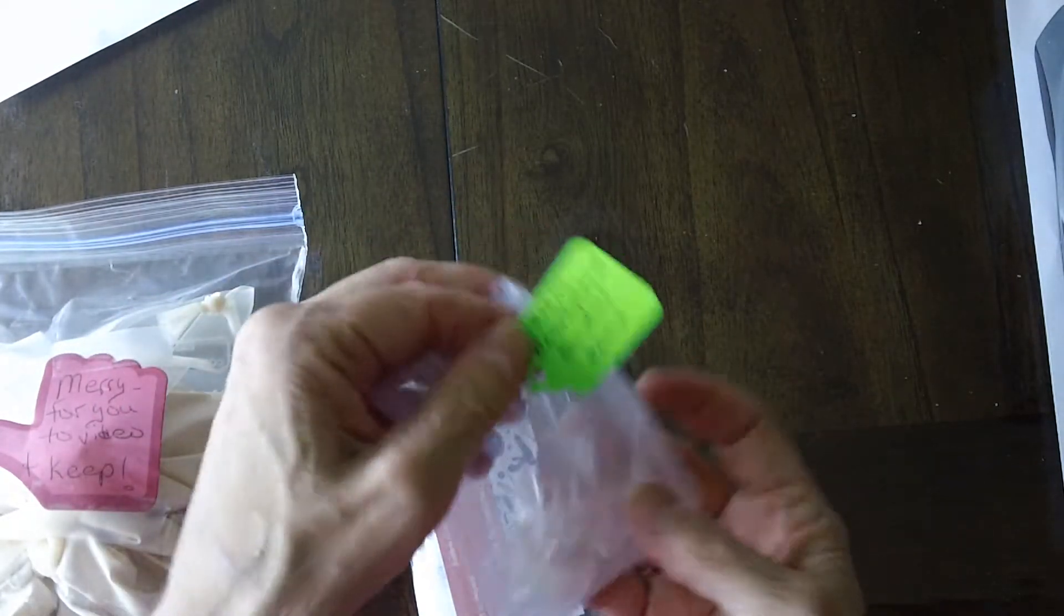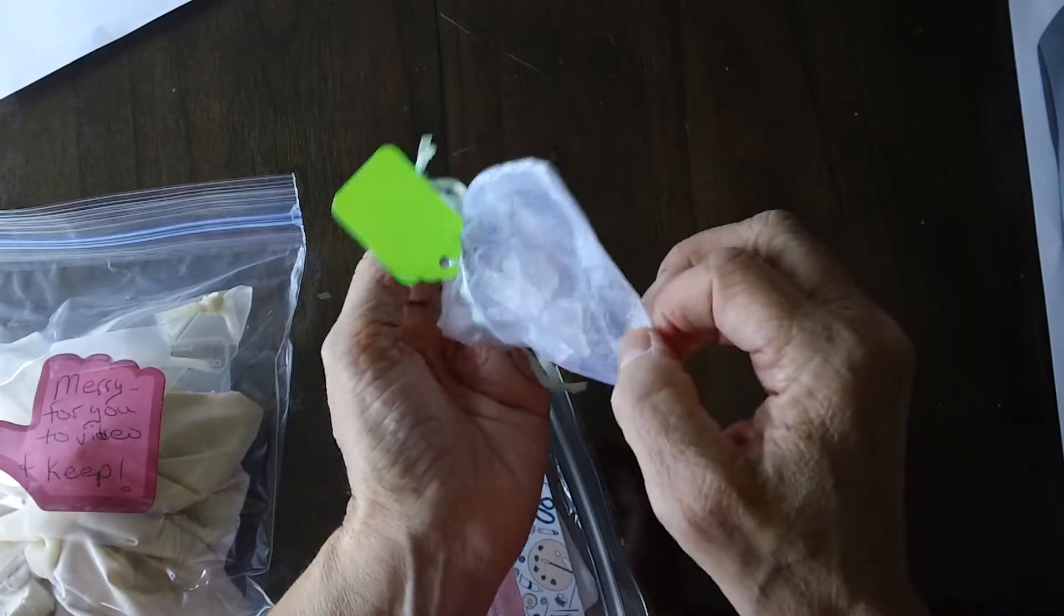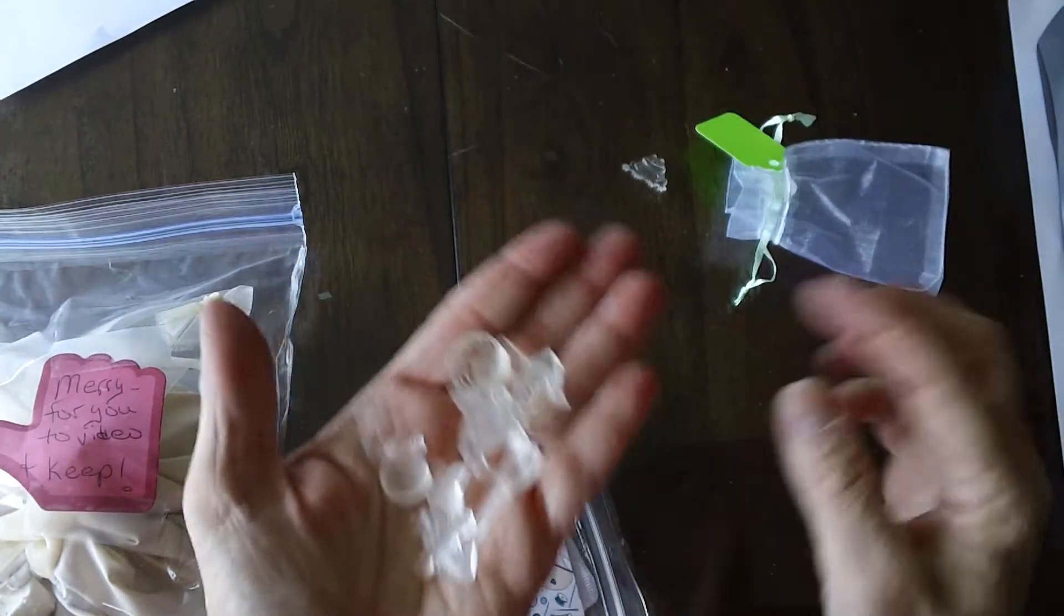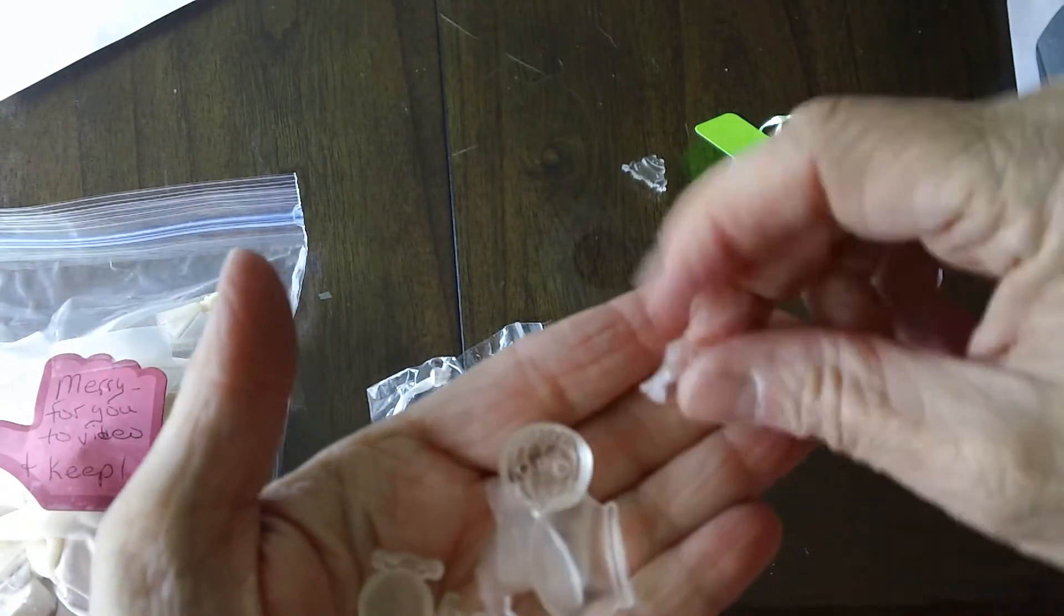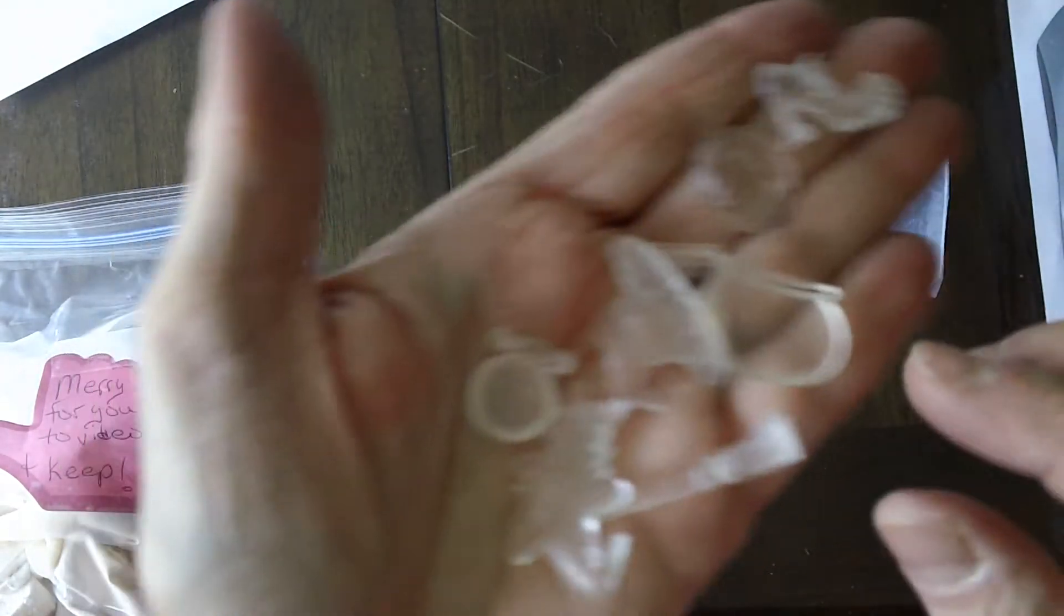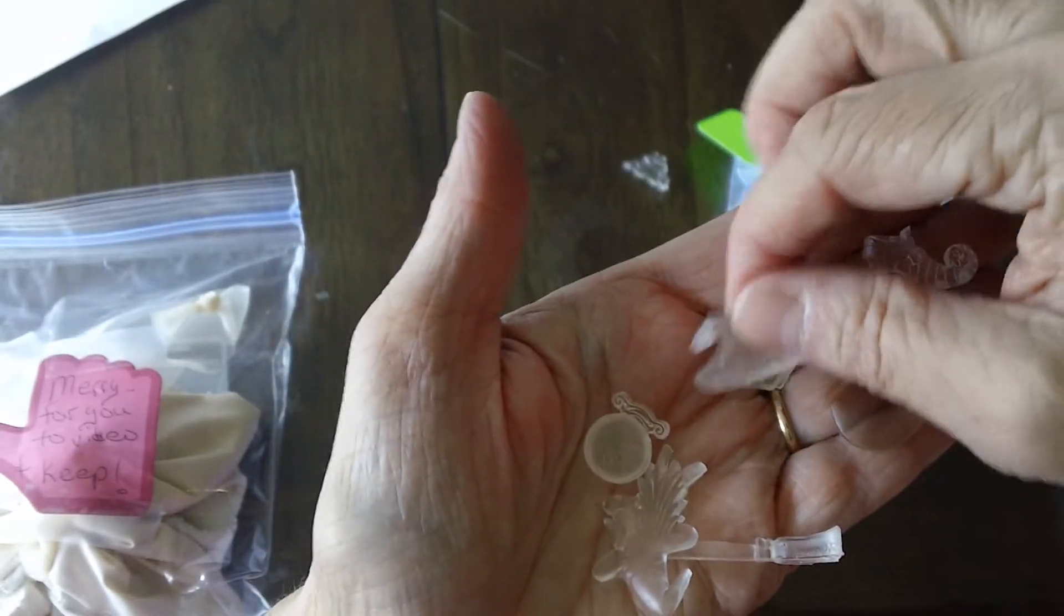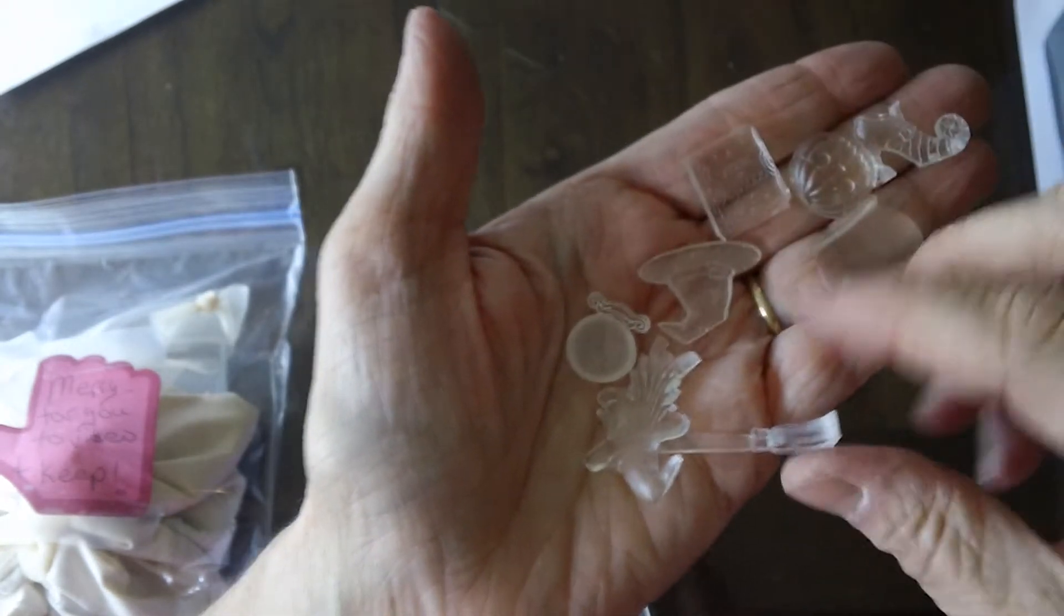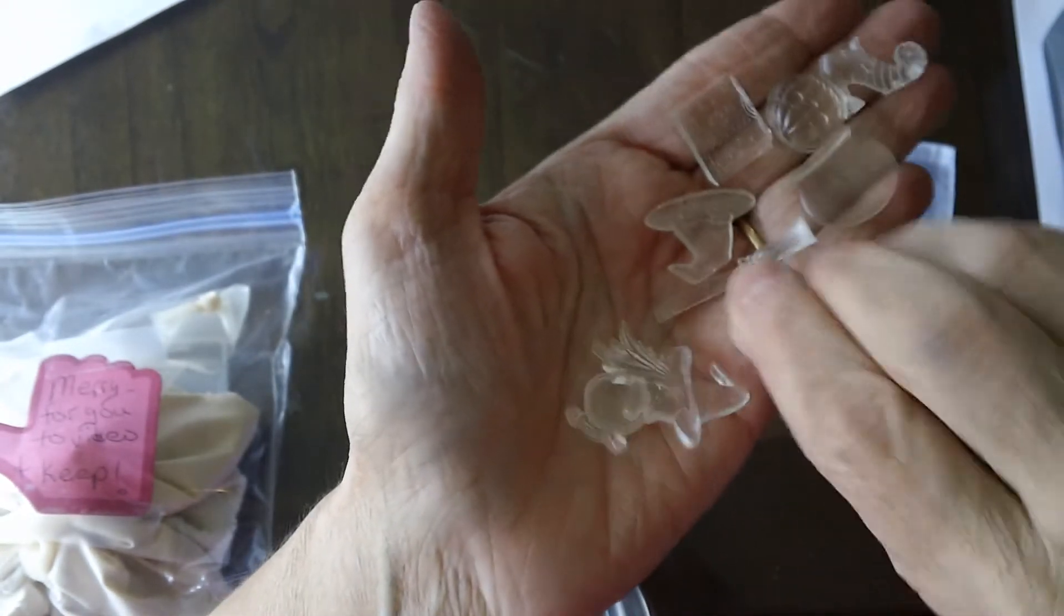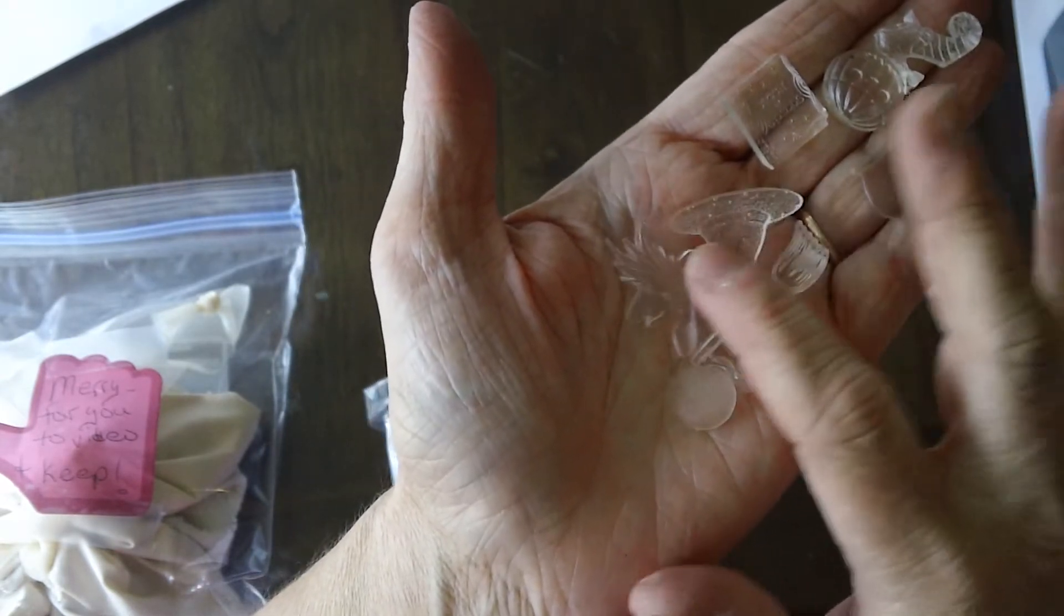These first ones are by Christine Harris and they were to be clear or white. So she's got a little witch's boot, a little pumpkin, so you could paint these, a cauldron, a witch's hat, a little book of spells, the broom, the witch, a little crystal ball.